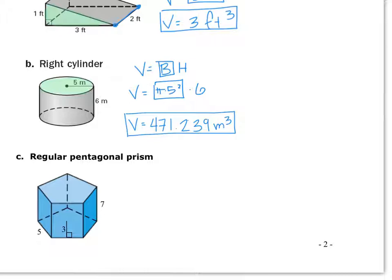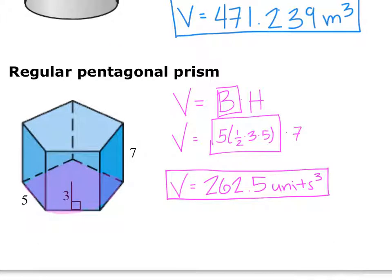Alright, see if you guys remember how to find the volume here. See if you can set it up, and then we'll talk through it. So if you see, I highlighted my base. That is a pentagon. So, I need to put the area of a pentagon in my box.